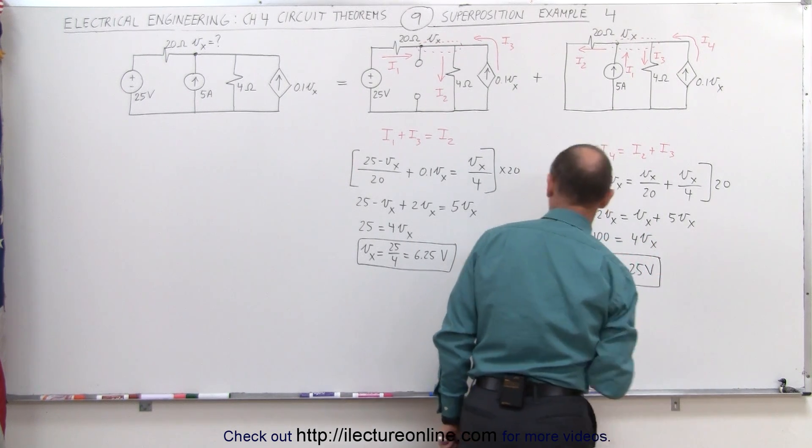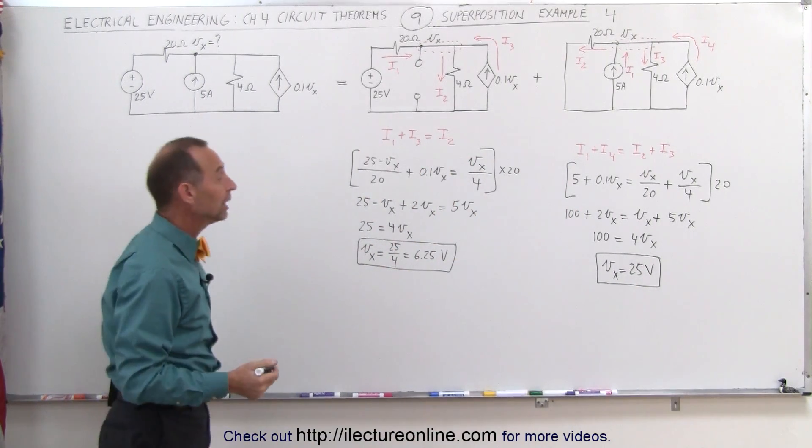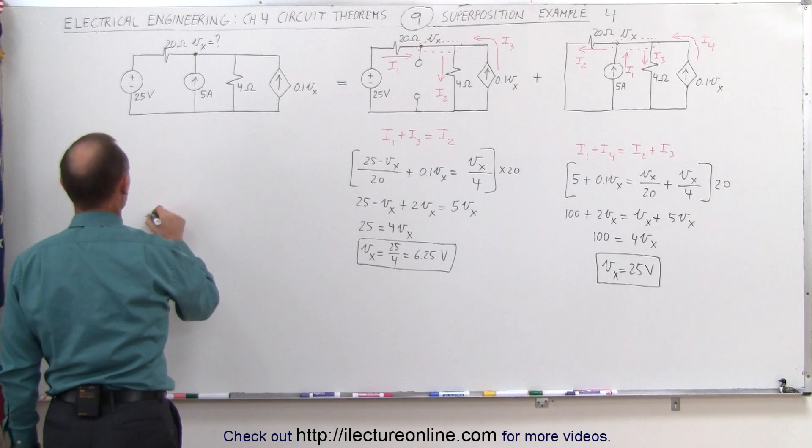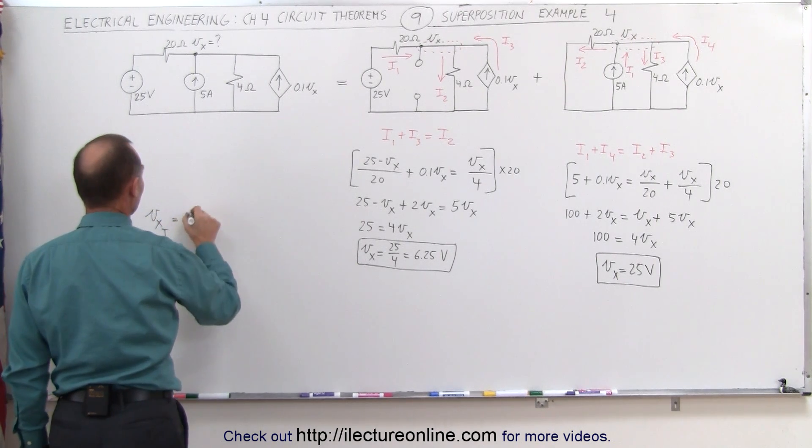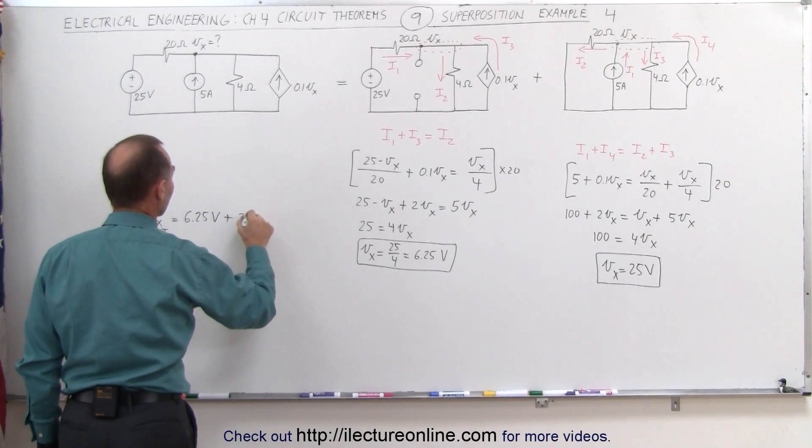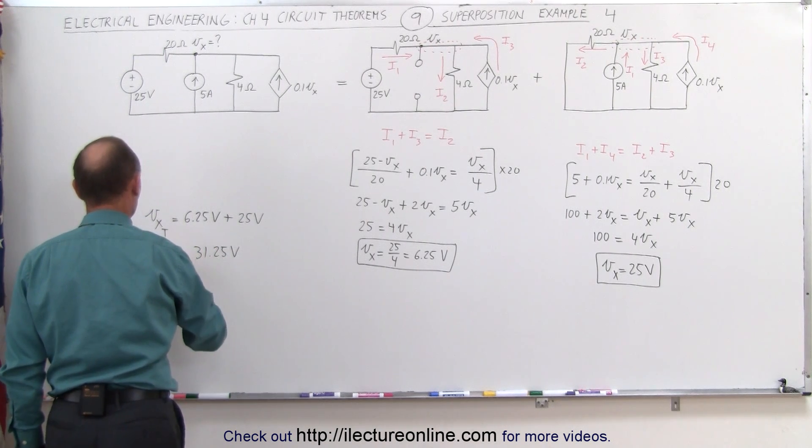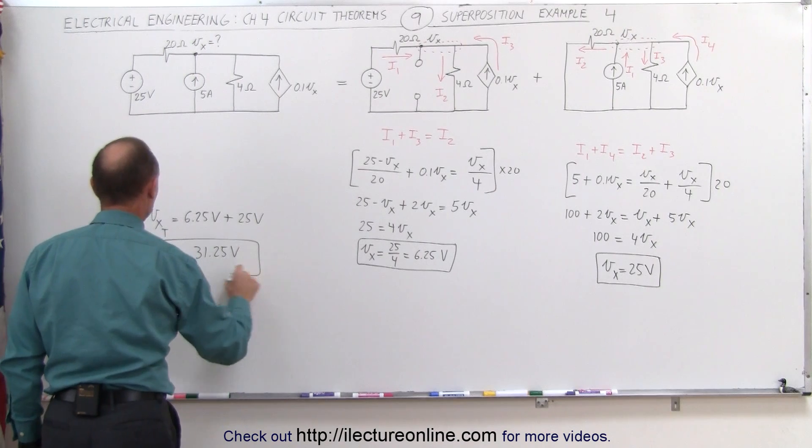In this case, we have 6.25 volts here, 25 volts there. All we need to do now is add it together. V sub X total is equal to V sub X for the first circuit, 6.52 volts, plus V sub X of the second circuit, 25 volts. That adds up to 31.25 volts for the total voltage at that particular node.